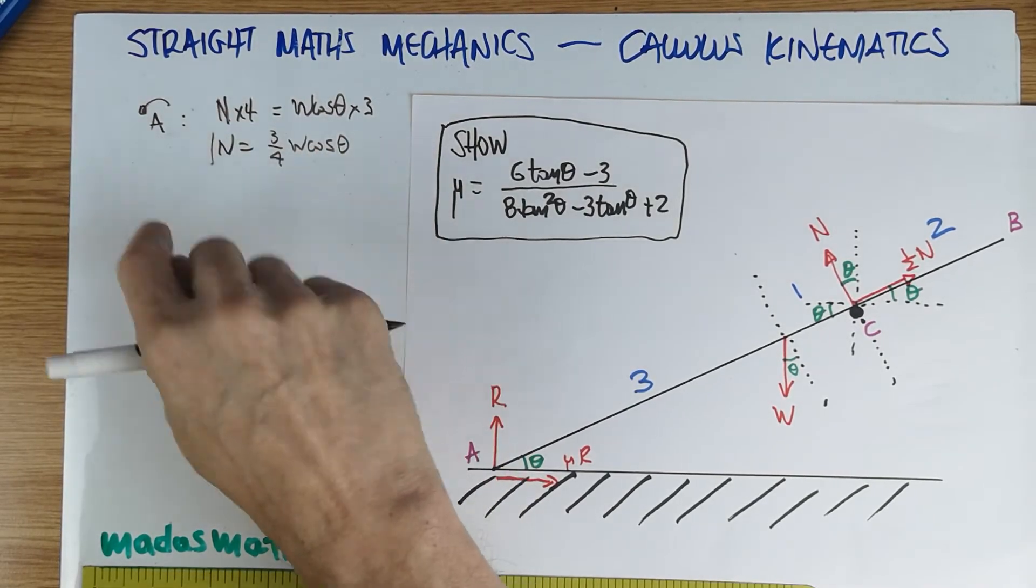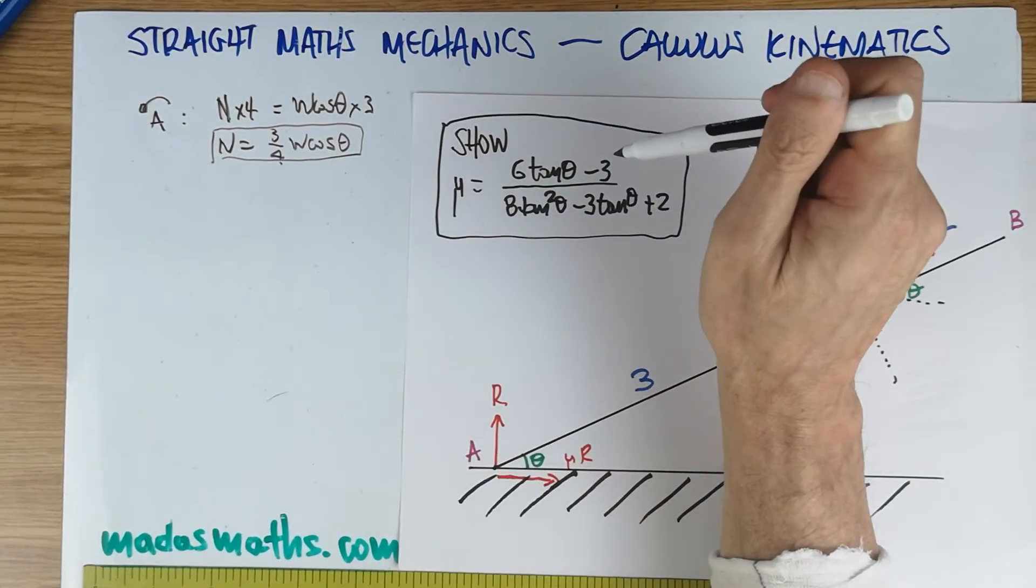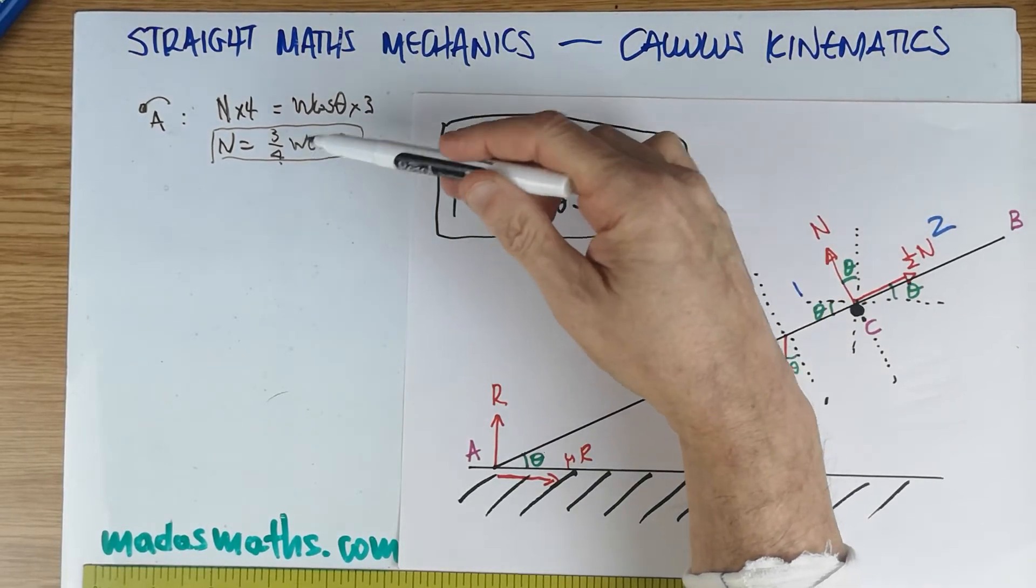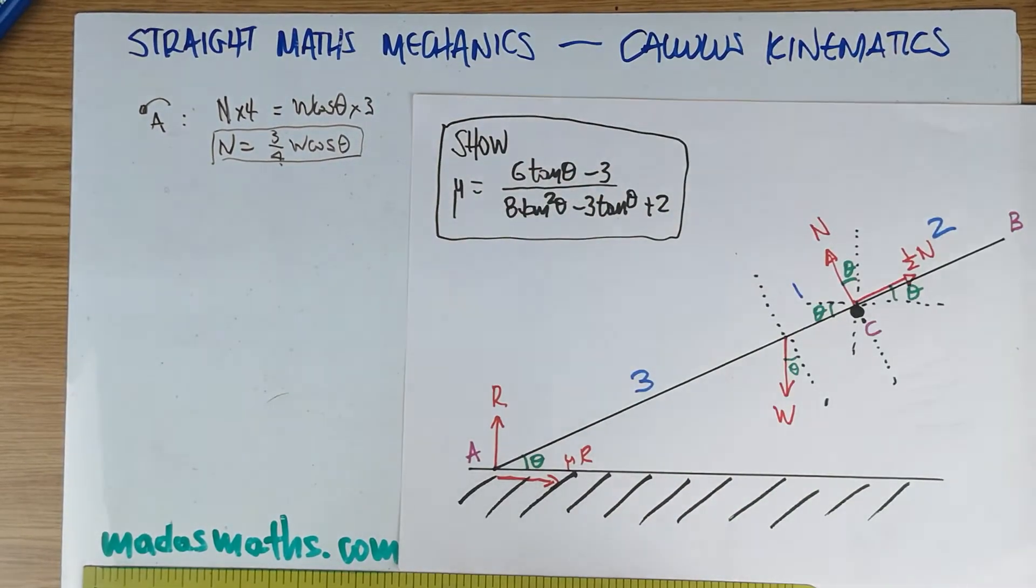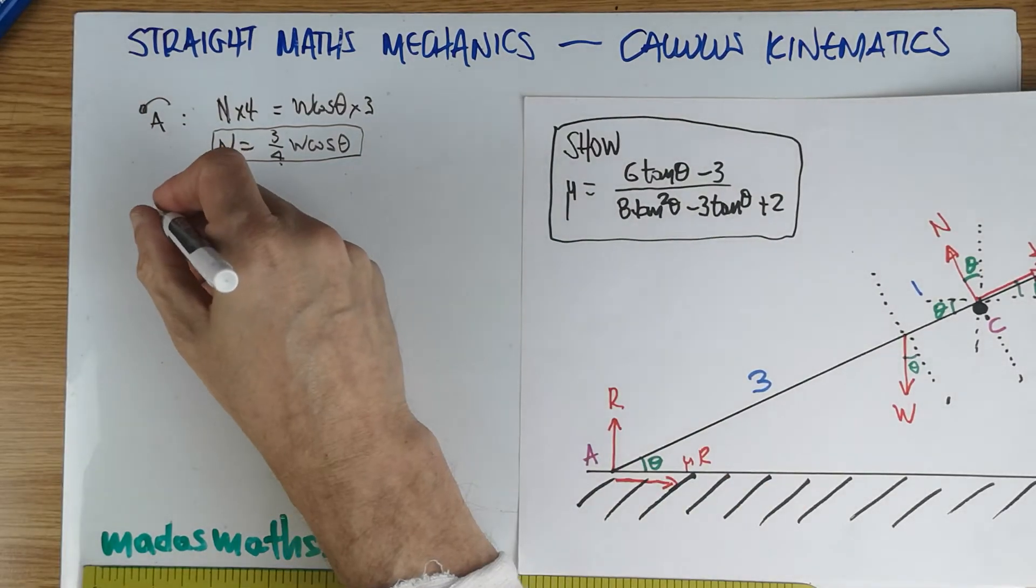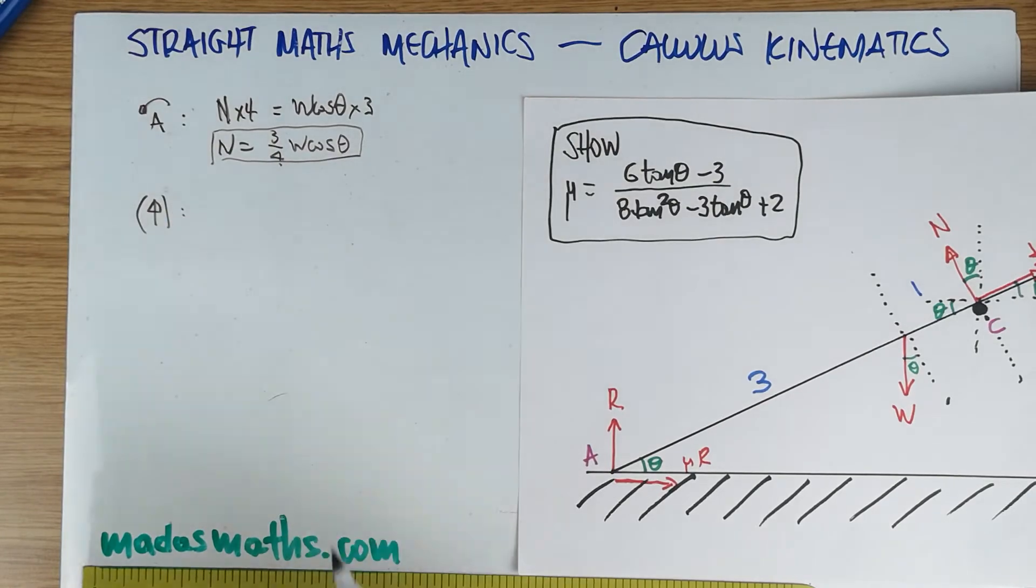This is the moment equation, which simply will say N is equal to three quarters W cos θ. Is this a decent equation? Well, it's a decent equation because if you look at the show, there is no W in there, and somehow I need to get rid of this W that's appearing. Next thing is to resolve vertically and horizontally.